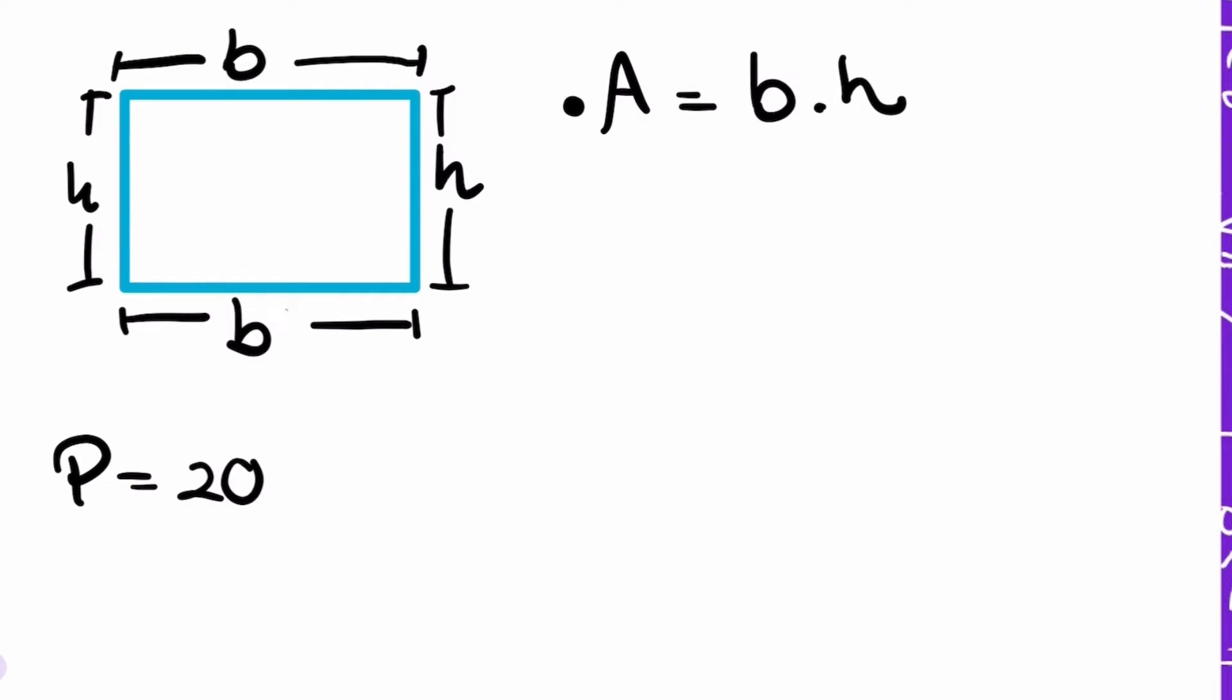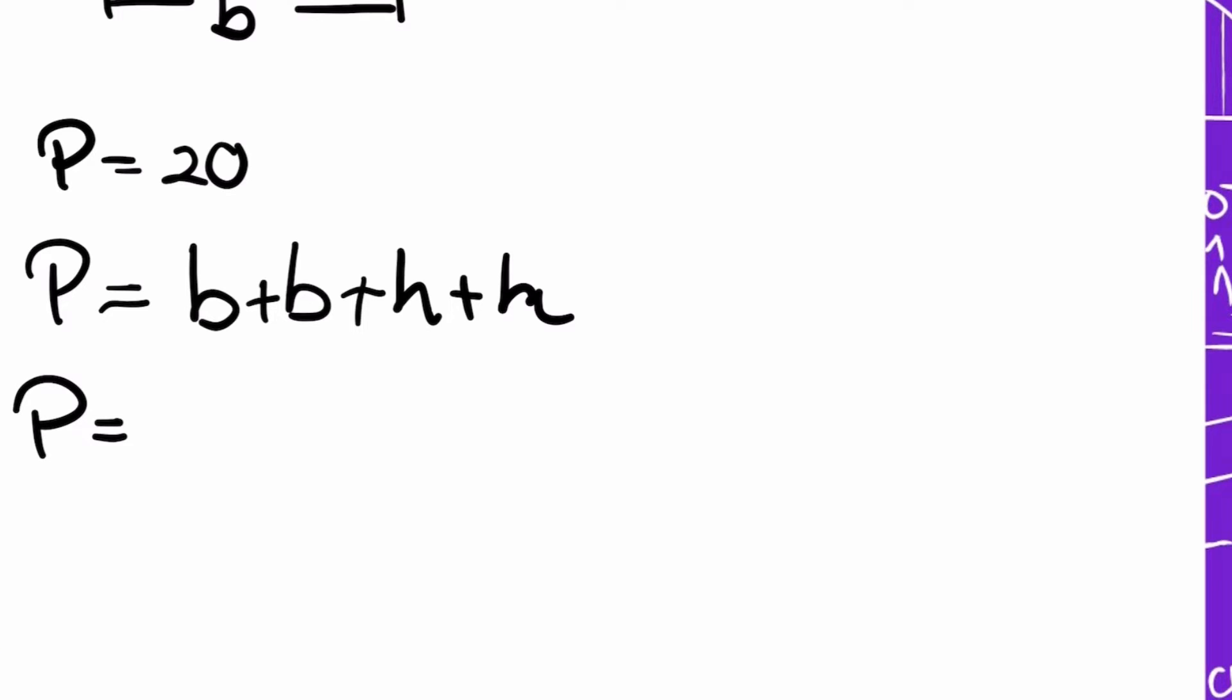I know that perimeter equals 20. I'm going to do my operation. Perimeter is the sum of all of its sides. First I have the base, the other base, plus the h of the left side, plus the h of the right side. I'm just calculating the perimeter. B plus b equals 2b, plus h plus h. This is like if you had 1h plus 1h, that gives us 2h.